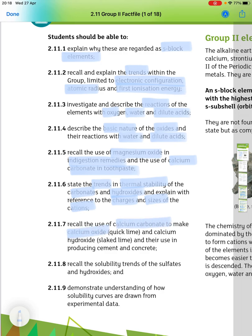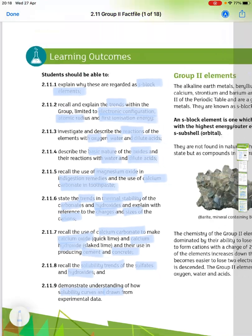Recall the use of calcium carbonate to make calcium oxide, which is quicklime, calcium hydroxide, which is slaked lime and their use in producing cement and concrete. Recall the solubility trends of the sulfates and hydroxides, and to demonstrate understanding of how solubility curves are drawn from experimental data.